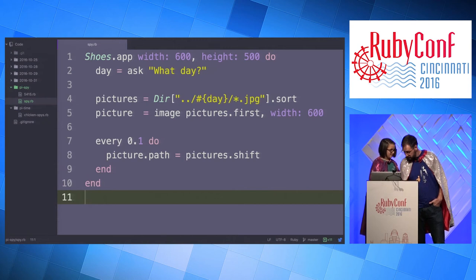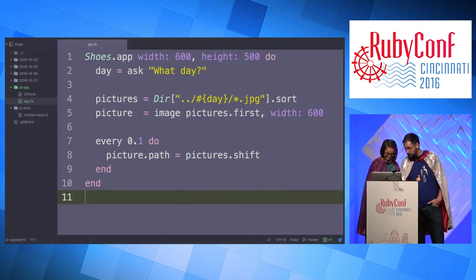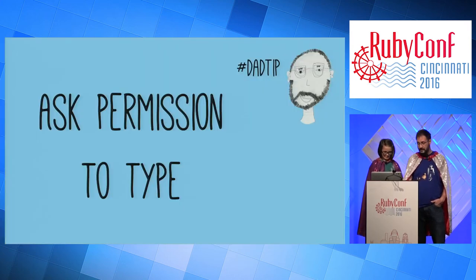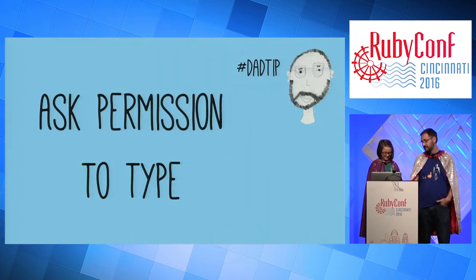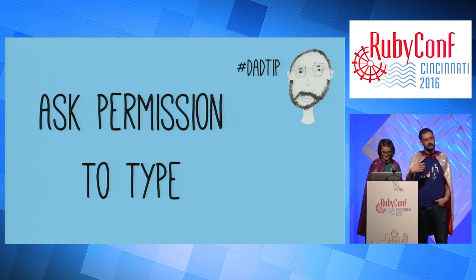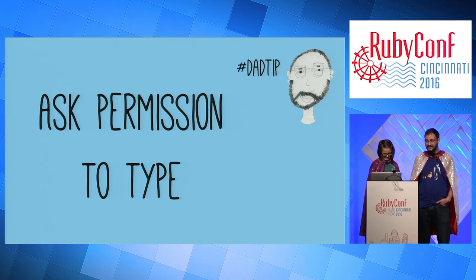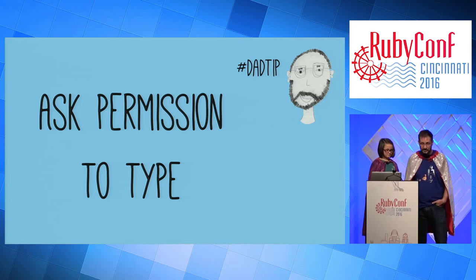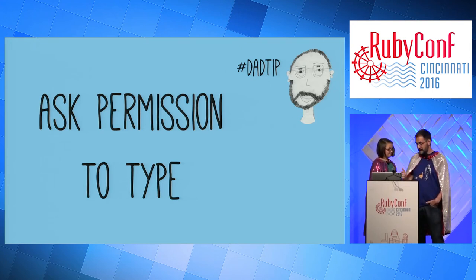Ask permission to type — that's a key tip. As much as possible when programming with kids, let them have control, let them have the keyboard, guide them in what they need to do, and don't just dive in and do it yourself. It takes a lot of patience, but you're the adult in the situation — you can have patience. This is part of your job.